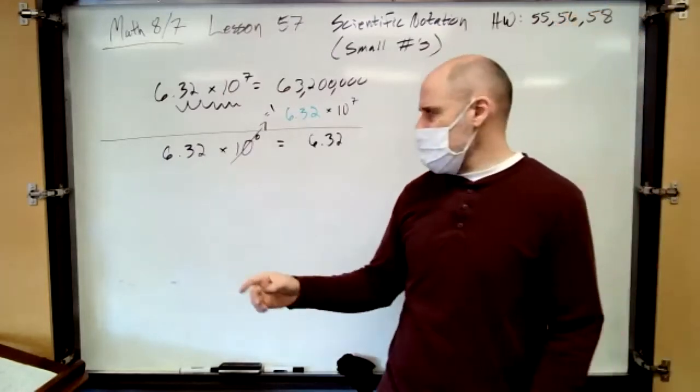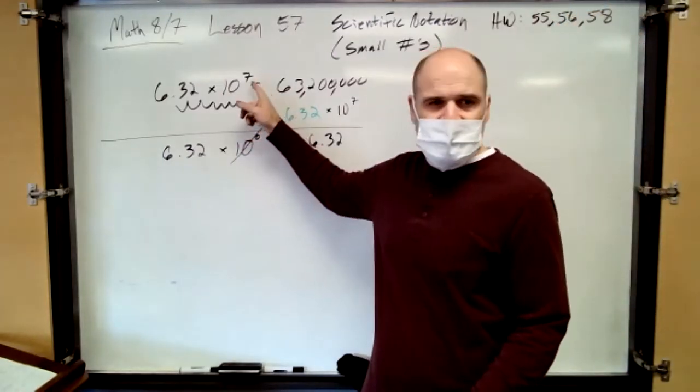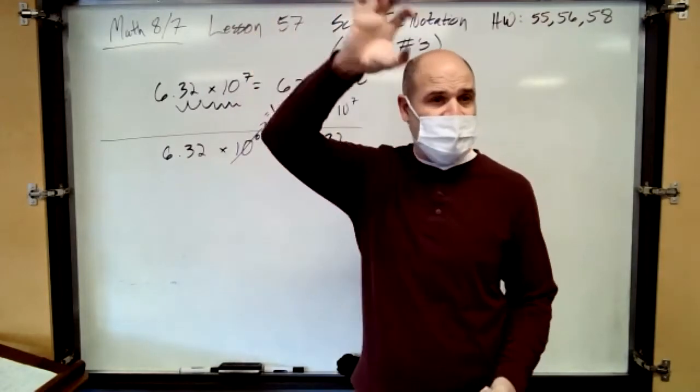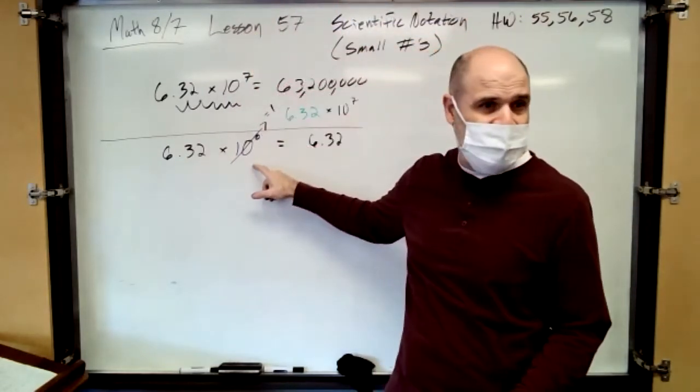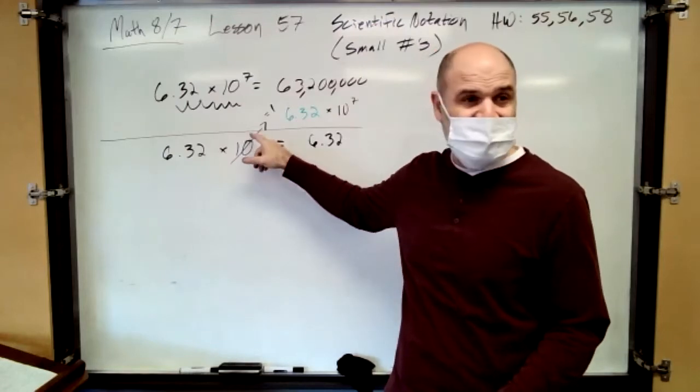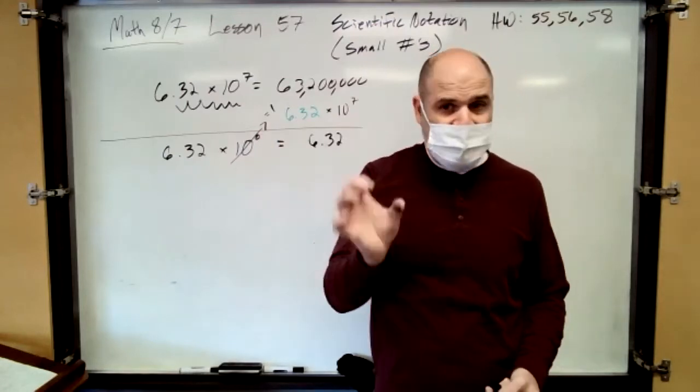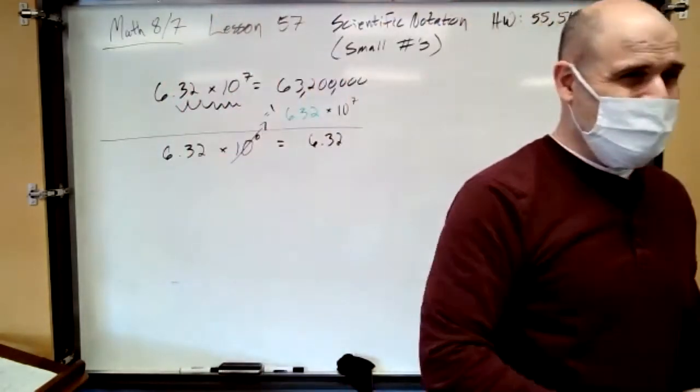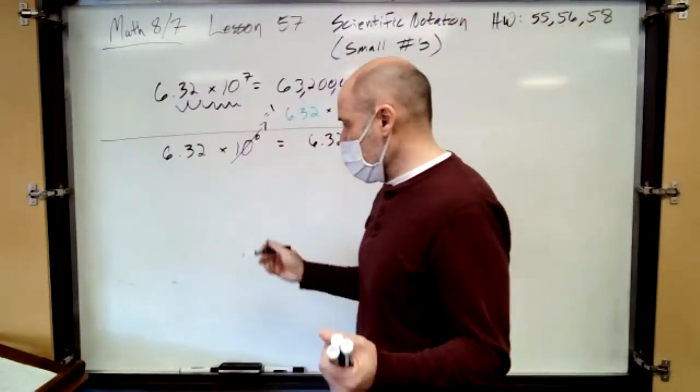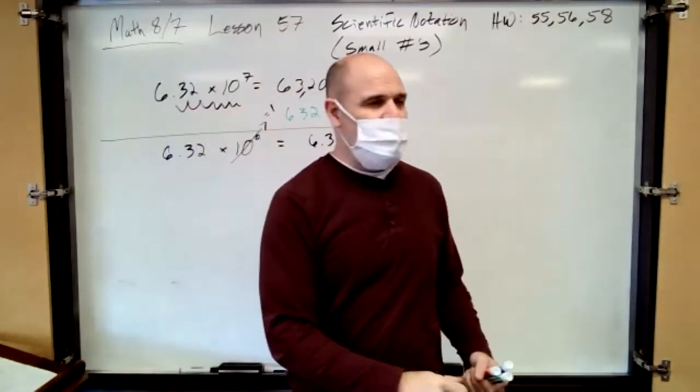And it kind of makes sense, because, remember, 10 to the seventh is a 10 with seven zeros in it, right? So, 10 to the zero is 10 with zero zeros in it. Well, if you take the only zero away from 10, what are you left with? One. Okay? Now, so that makes sense. You don't go at all.